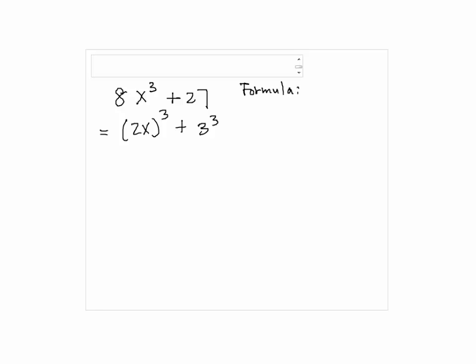The formula says a cubed plus b cubed equals a plus b times a squared minus ab plus b squared.